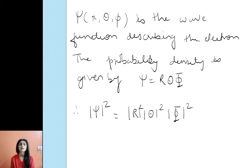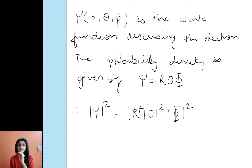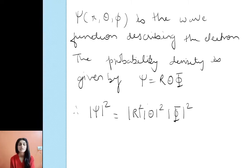Suppose psi is a wave function — psi is a function of r, theta, and phi — describing the electron. We can talk about the location of the electron in terms of the wave function psi, and the probability density is given by |psi|² = |R|² · |Θ|² · |Φ|². This |psi|² gives the probability of locating the electron.